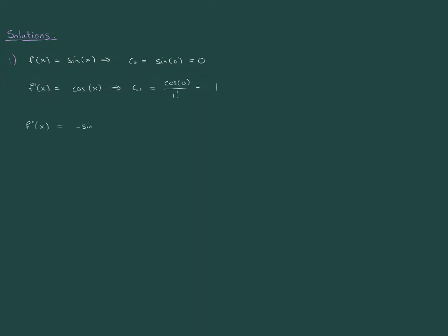So f''(x) is -sin(x), which tells us that c_2 is -sin(0) over 2 factorial, which is 0. f'''(x) is -cos(x), which tells us that c_3 is -cos(0) over 3 factorial. Now, here's where the pattern kicks in.